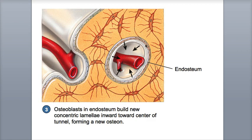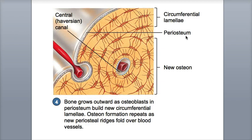Osteoblasts in the new endosteum start producing bone matrix, forming new concentric lamellae. The new lamellae are deposited inward toward the blood vessel, which gradually fills in the tunnel, creating a new osteon. Osteoblasts under the periosteum start producing new circumferential lamellae, which continues to increase the bone's thickness as the bone grows outward. Appositional growth continues as more periosteal blood vessels become enclosed in grooves, then tunnels. New osteons are created, and the process continues.